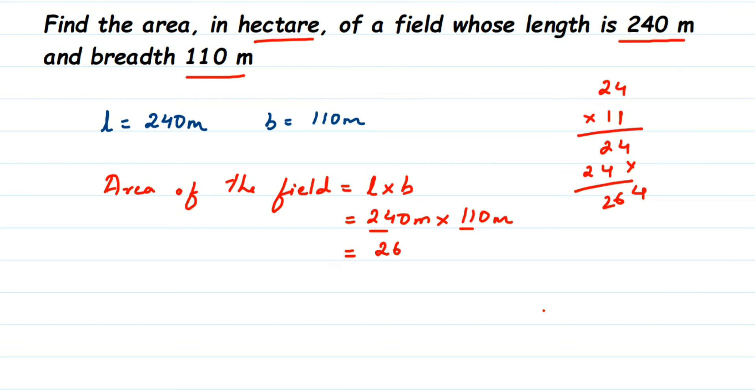So this will become 264 followed by two zeros because we have not taken the zeros right, here 10 and here 10, you just put them. So don't take 0 and you do multiplication, it will become much easier. So 26400 meter square.